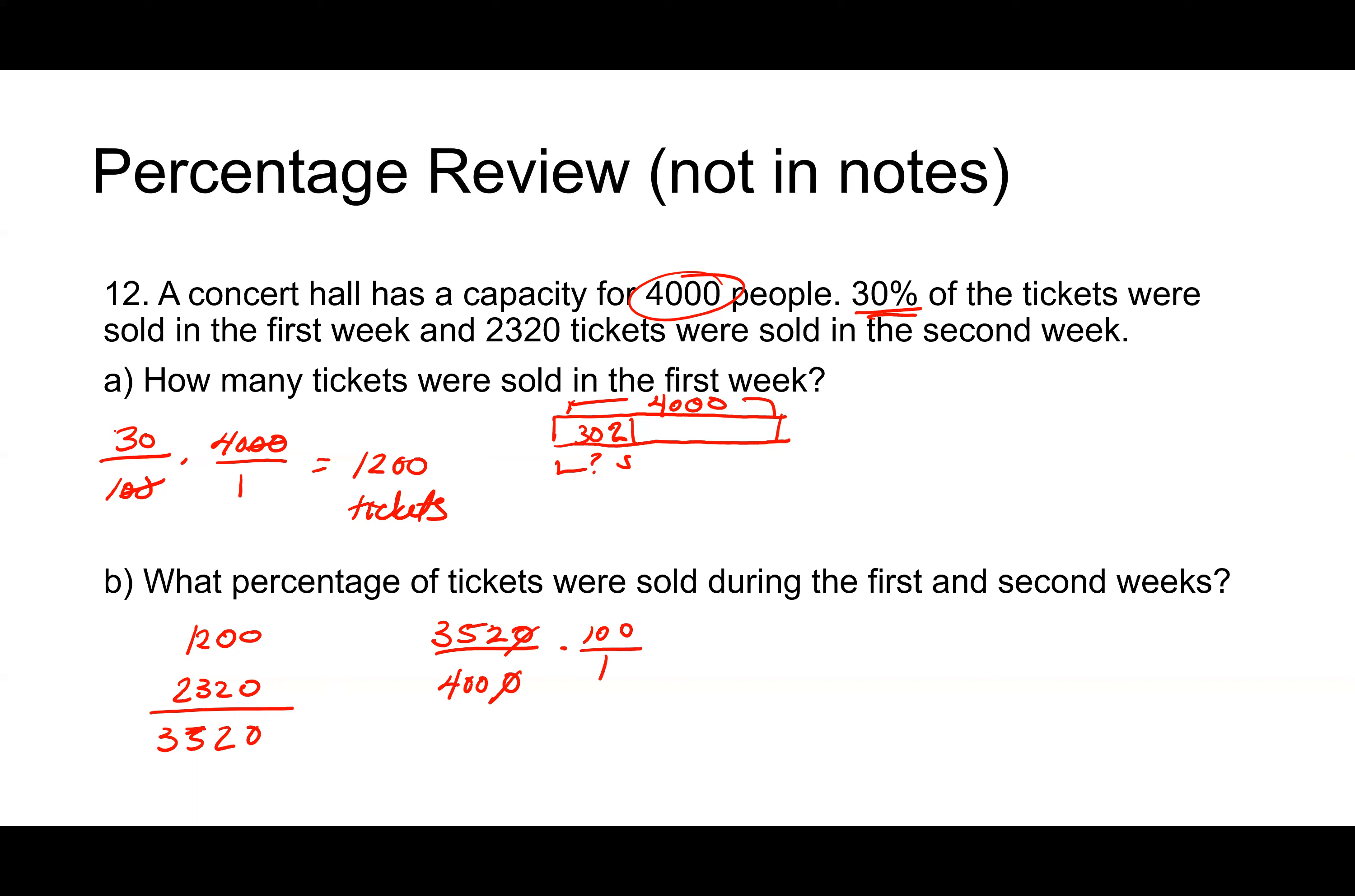So we want to find out what percentage of 4,000 is 3,520. When we change to a percentage, we can multiply by 100 over 1, or we can divide and get that denominator down to 100. But now we've got 352 divided by 4. So let's go ahead and do that long division. What's my percentage, guys? 88%.